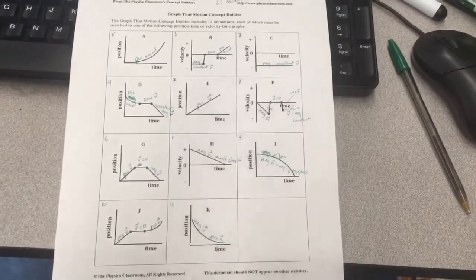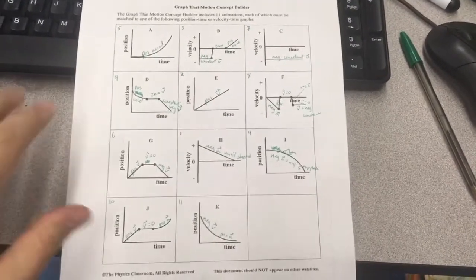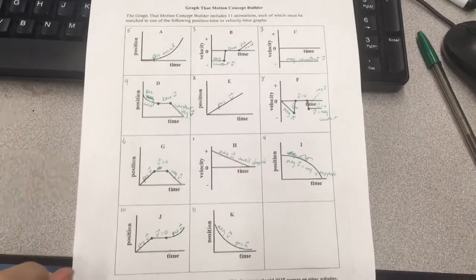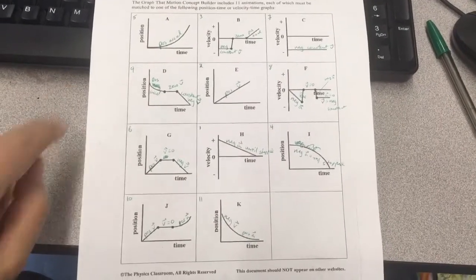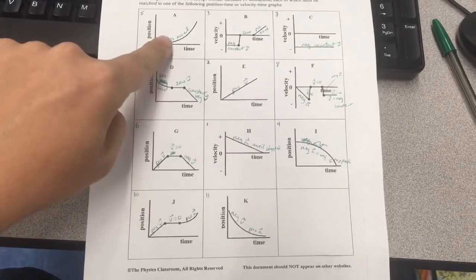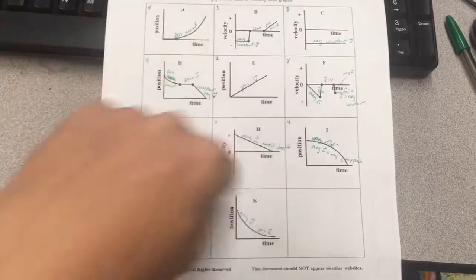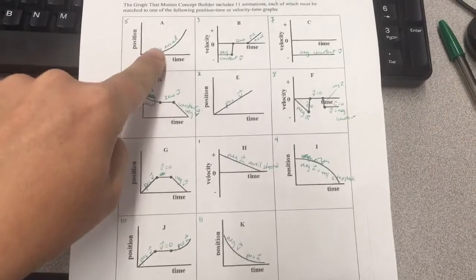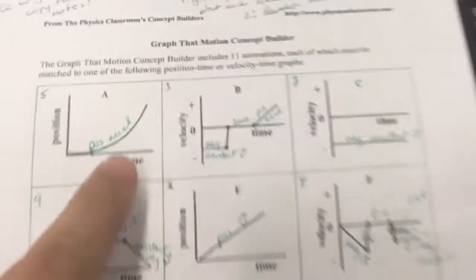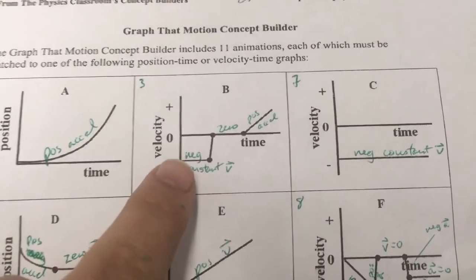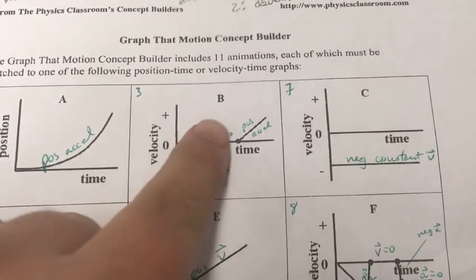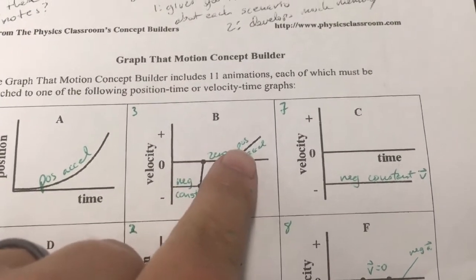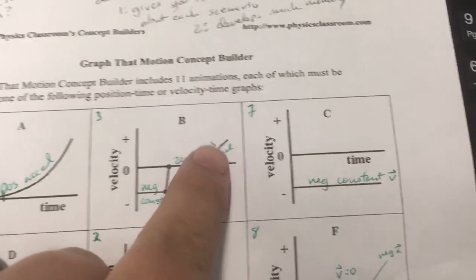Okay students, here are the notes for the Graph That Motion concept builder. This is positive acceleration. This is negative constant velocity, then zero — stopped — and then positive acceleration.